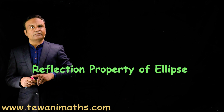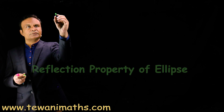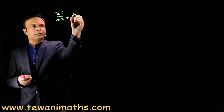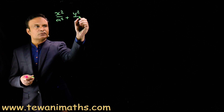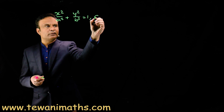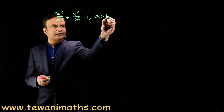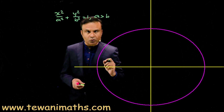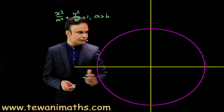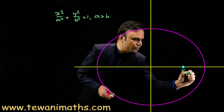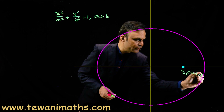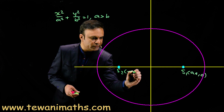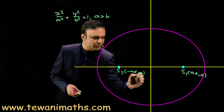Consider the standard equation of ellipse: x² / a² + y² / b² = 1, where a is greater than b. Placing this ellipse on the coordinate axis, we have focus S1 with coordinates (a, 0) and focus S2 with coordinates (−a, 0).